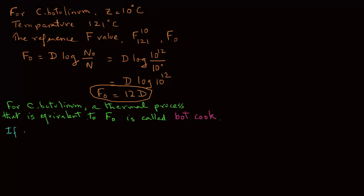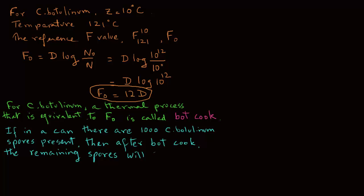So if in a can there are 1,000 spores of Clostridium botulinum present, then after a bot cook, the remaining spores can be obtained from spoilage probability. Again, you may want to refer to that tutorial, where we found that 1 over R equals N0 over 10 raised to power F over D. Or, if N0 is 1,000 spores, 10 raised to power 3, divided by 10 raised to power 12D over D, which gives us 10 raised to power minus 9. So that means out of 10 raised to power 9 cans processed, 1 can will have a surviving spore.